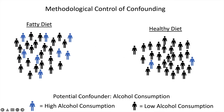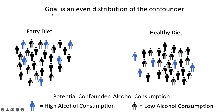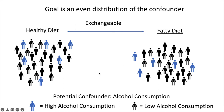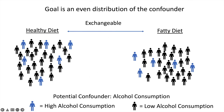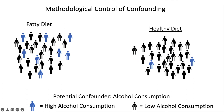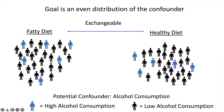In the non-exchangeable situation, if we were able to do something that made these two groups similar with respect to alcohol consumption — here we have a group with six people with high alcohol consumption and this group has five — we're going to assume that's enough for them to be exchangeable. Exchangeable means we could switch what diet these two groups have and still detect the effect of a fatty diet on liver disease. Basically, all the methodological ways to control for confounding are trying to go from this uneven distribution and make the two populations more similar with respect to everything except the exposure of interest.